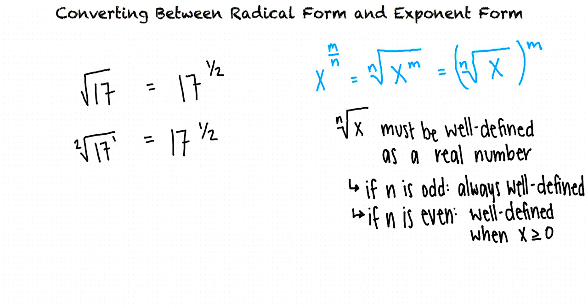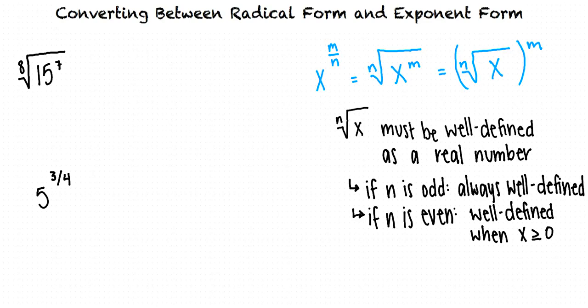Okay, can we try a few more examples? Sure, let's take a look at these: the 8th root of 15 raised to the 7th power, and 5 raised to the power of 3 fourths. For the first example, we are given an expression in radical form, so we want to convert it to exponent form.